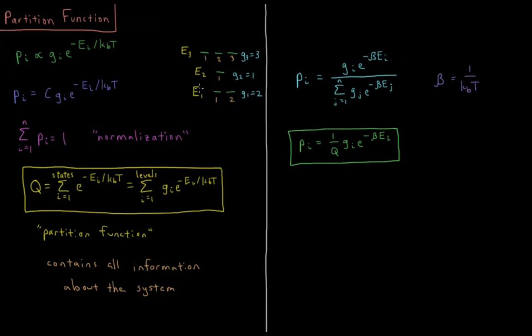We get distinct sets of energies - E1, E2, E3 - in different energy levels. Each of those levels has a given number of states, a degeneracy Gn, so two-fold, one-fold, or three-fold degenerate.